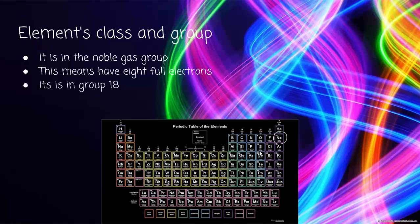Neon is in Group 18. To find groups, you go across — for those who don't know, groups are the columns going down. It's in Period 2, and periods are the rows. So you count 1, 2, and go to 18, which is where Neon sits. That's how you find groups.